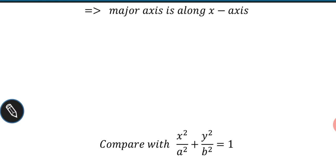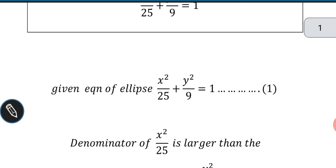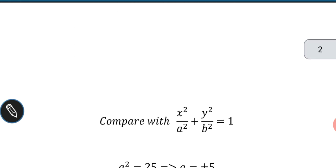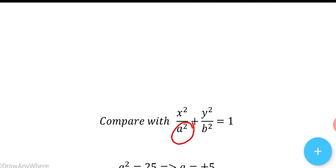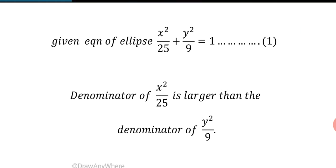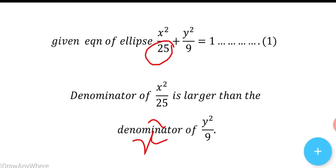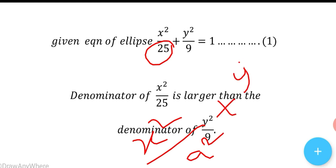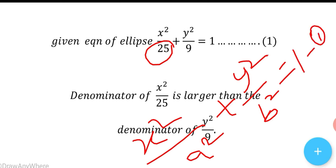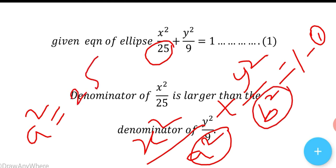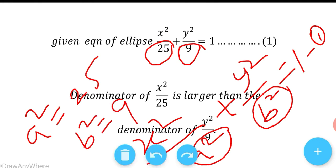Comparing the given equation with the standard equation x squared by a squared plus y squared by b squared equal to 1, with the major axis along the x-axis, we get a squared equal to 25 and b squared equal to 9.